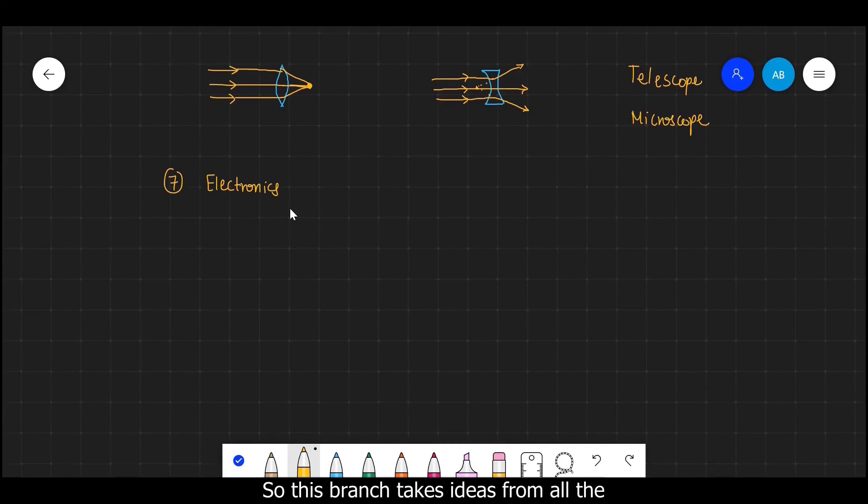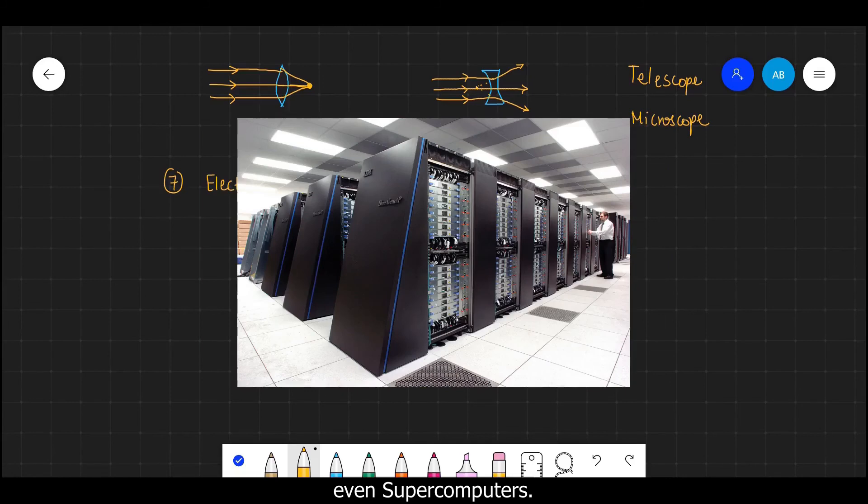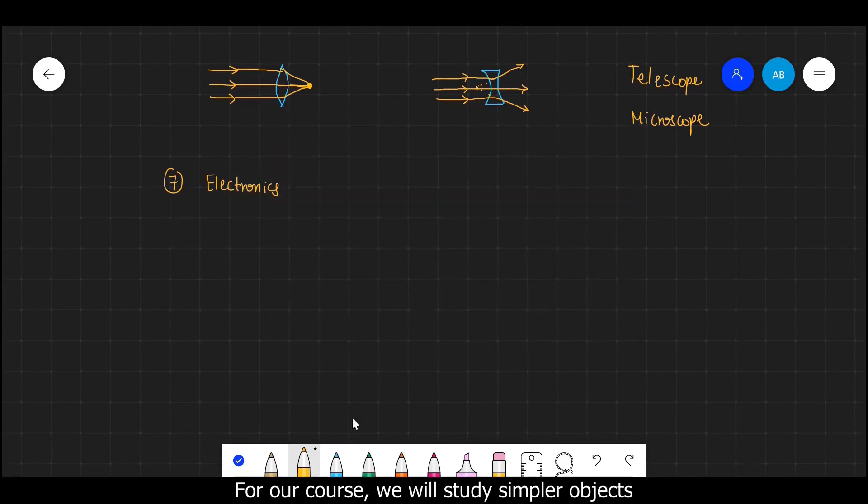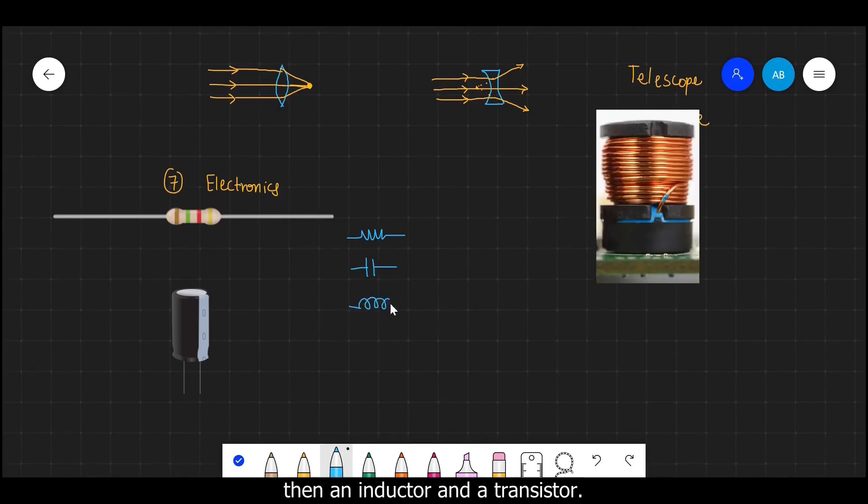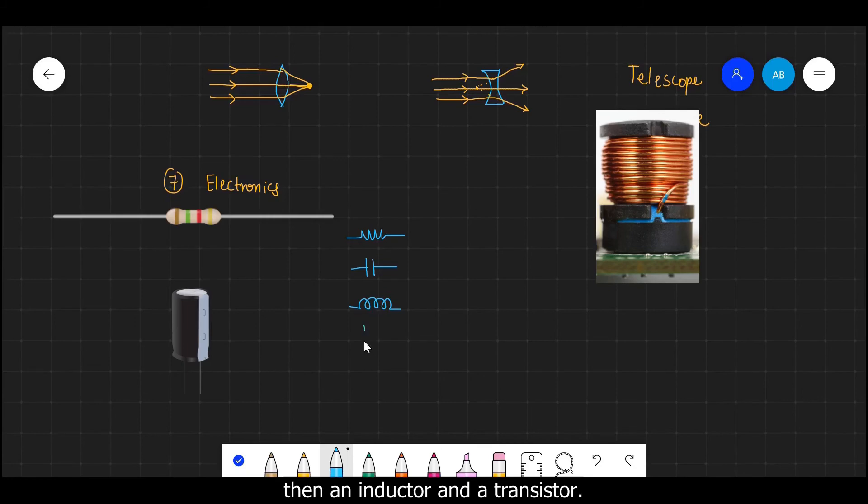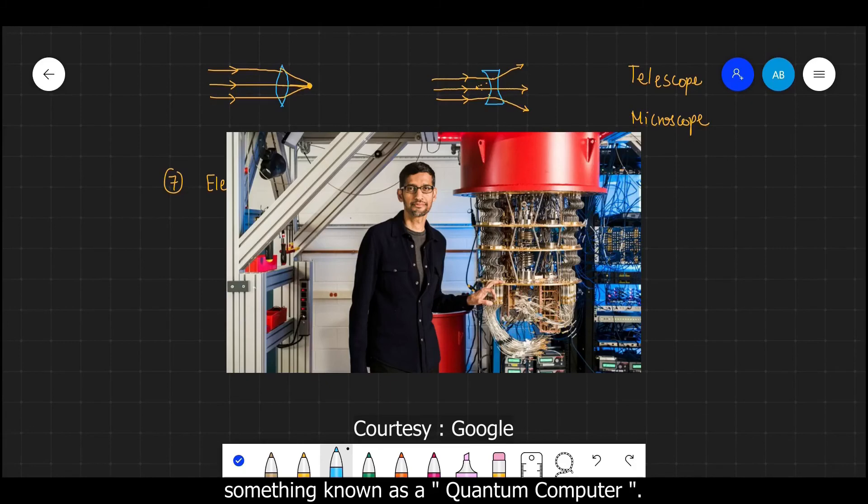Good. Now we move to the next branch which is electronics. So this branch takes ideas from all the other branches and creates useful devices. We all know the applications of electronics that includes laptop, mobile phones, TV, and even super computers. For our course we will study simple objects of electronics such as a resistor or a capacitor, then an inductor and transistor. And these days people are even trying to combine quantum mechanics with electronics to create something known as a quantum computer.